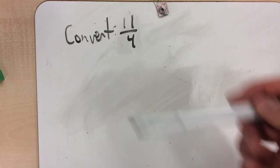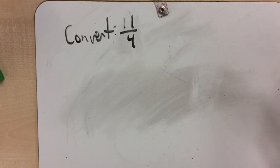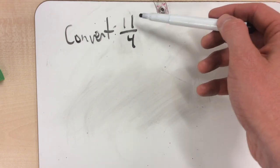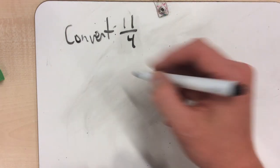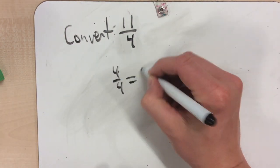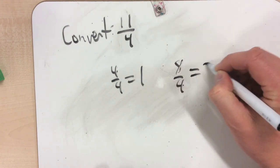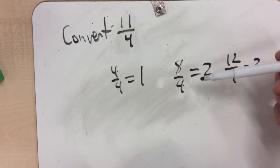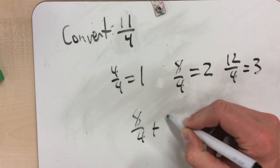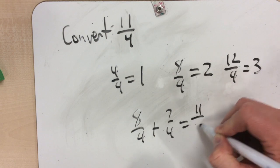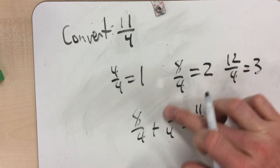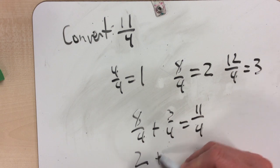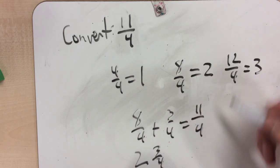If you want to convert 11 over 4, which is an improper fraction, to a mixed fraction, you just need to look at the size of the fractions. It's quarters or fourths, so every 4 of these will be a whole. So 4 fourths equals 1, 8 fourths equals 2, and 12 fourths equals 3. We have 8 but not quite 12, so we know 8 fourths plus some number of fourths equals 11 fourths. Since 8 plus 3 equals 11, that gives us 2 and 3 quarters — so 2 and 3 quarters is the same as 11 fourths.